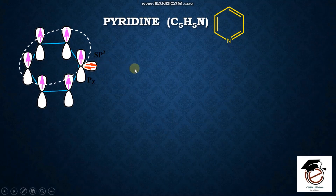Looking at the MO diagram, nitrogen is sp2 hybridized with two sp2 hybridized orbitals forming sigma bonds. One sp2 hybridized orbital holds a lone pair. It is in a perpendicular p-orbital stage and participates in pi cloud formation via the ring current.